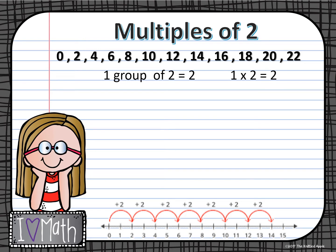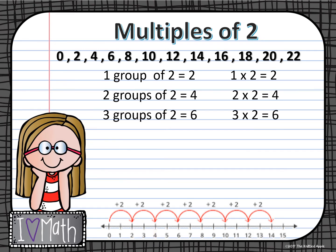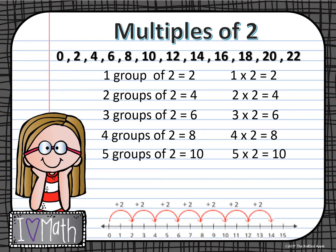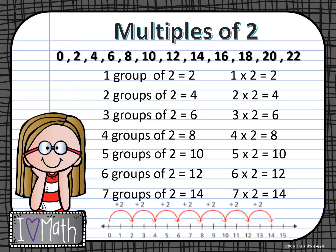So 1 group of 2 equals 2, 2 groups of 2 is 4, 3 groups of 2 is 6 — and you'll notice on the number line we're at the 6 down below. 4 groups of 2 is 8, so we would be at the 8 on the number line. 5 groups of 2 is 10. 6 groups of 2 would be 12, and we would continue. 7 groups of 2 would be 14, and 8 groups of 2 would be 16, 18, and we would continue counting by 2s on and on. So those are our multiples of 2, or products of 2.